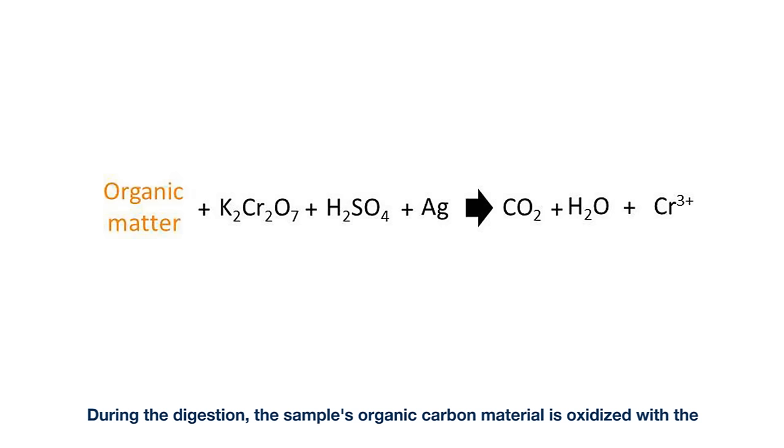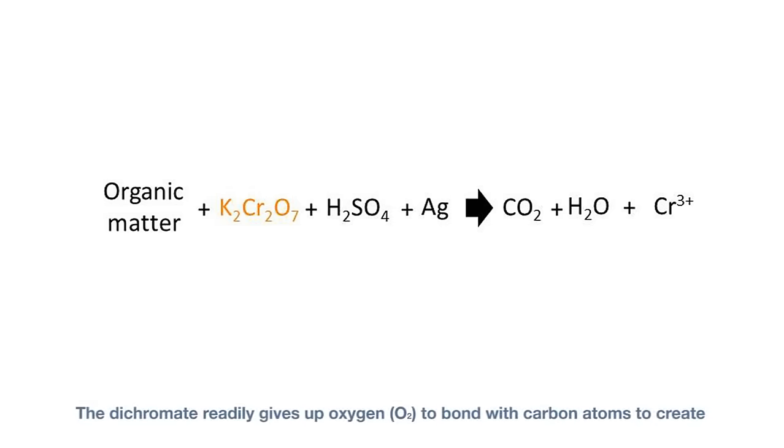During the digestion, the sample's organic carbon material is oxidized with the hexavalent dichromate ion found in potassium dichromate. The dichromate readily gives up oxygen to bond with carbon atoms to create carbon dioxide.